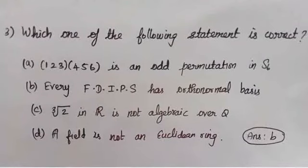And third question. If you have 4 statements, which one of the following statements is correct? Second statement. Every finite dimensional inner product space has orthonormal basis. This one is correct. So the answer is option B. Every finite dimensional inner product space has orthonormal basis.